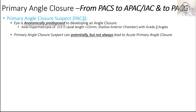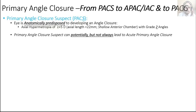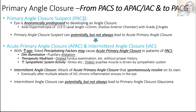Primary angle closure suspects are individuals with an axially small eyeball with a hypermetropic error of 5 diopters or more. When you have a small eyeball, light rays from distance focus behind the retina. Because the eyeball is smaller, the anterior chamber is shallower, meaning the iris and cornea are closer to one another. On gonioscopy, these individuals have grade 2 angles but no elevated IOP and no cupping or visual field effects.